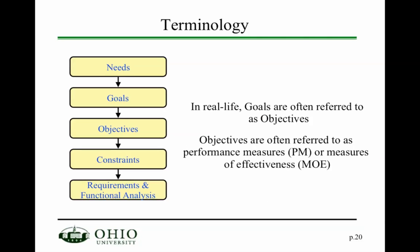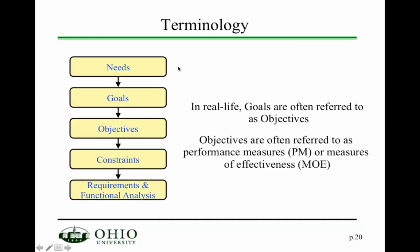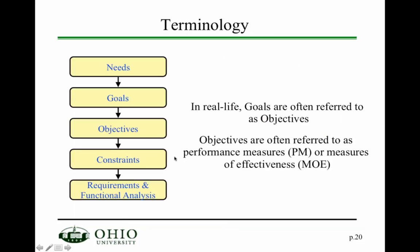In terms of terminology, you typically start out with needs, then turn those needs into goals, objectives, constraints, and finally requirements. In real life, goals are often referred to as objectives, and objectives are often referred to as performance measures or measures of effectiveness. This terminology depends largely on the company you work for or the terminology you choose to adopt.